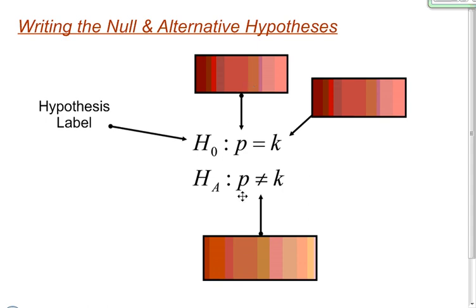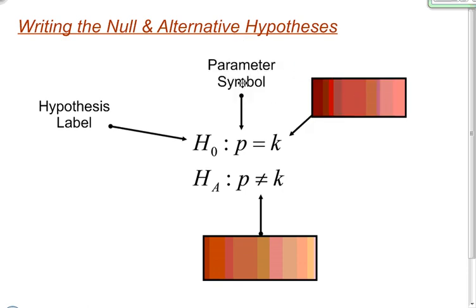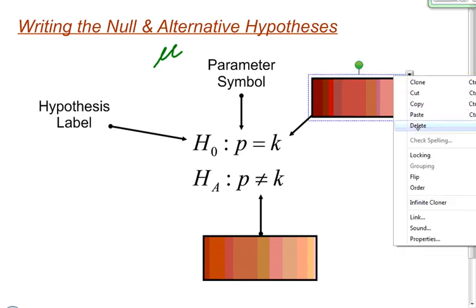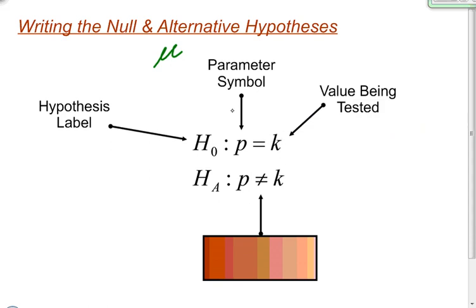The P here stands for your parameter symbol. In this case, P stands for population proportion. Sometimes the other most common symbol you would use for your parameter is mu, which stands for population mean. But here I'm using P for population proportion. The next part, K, could be any value — for proportions it would be any value between zero and one, and that's just the value that's being tested.